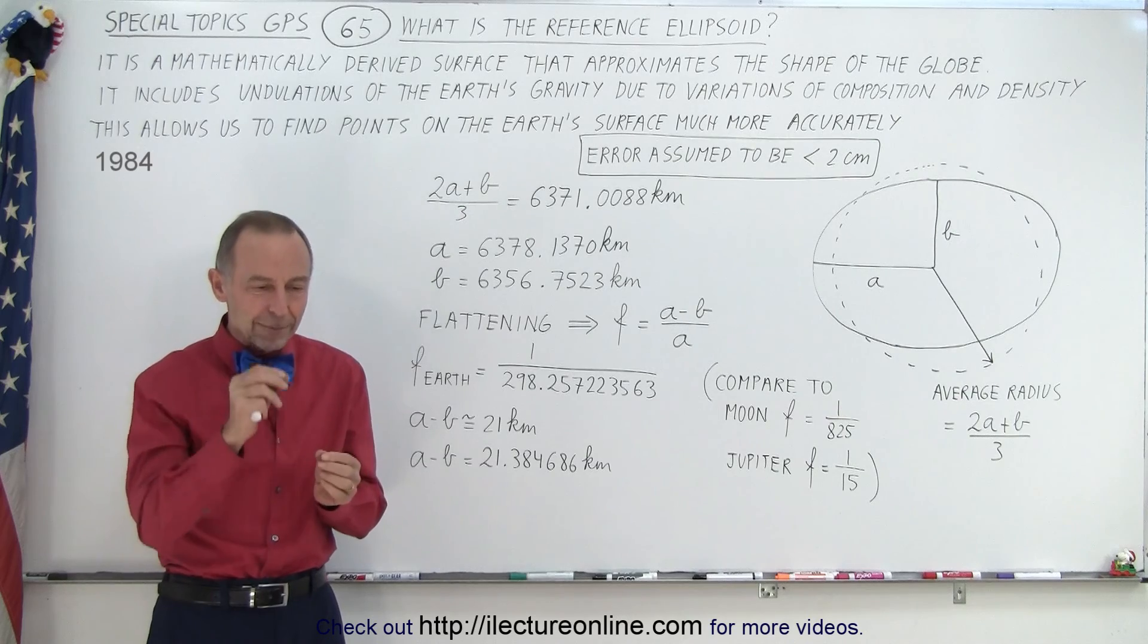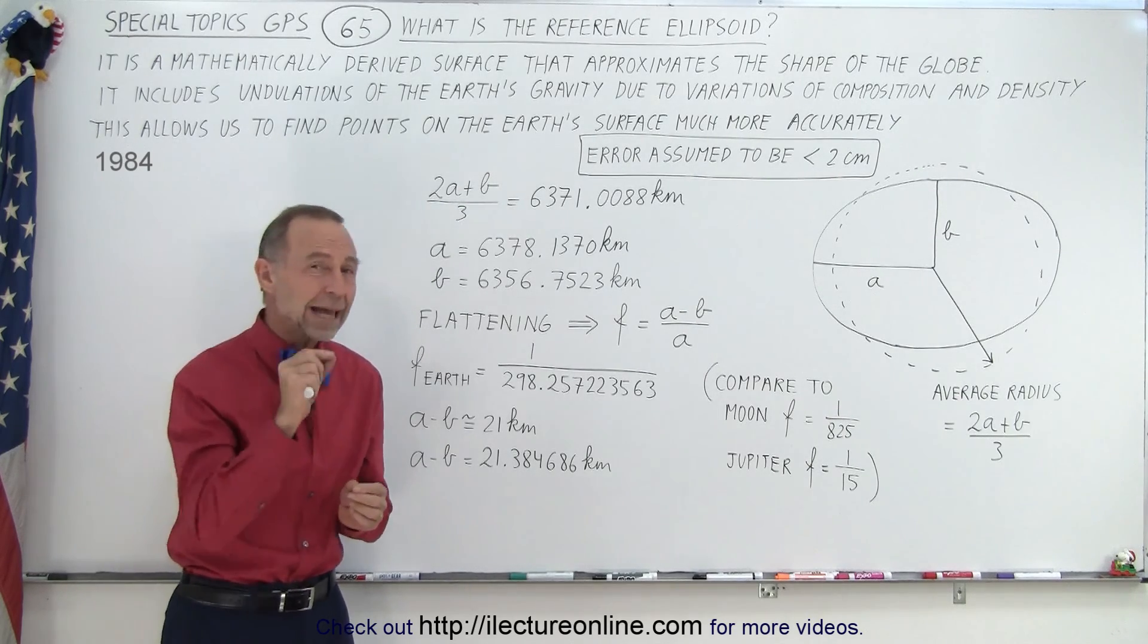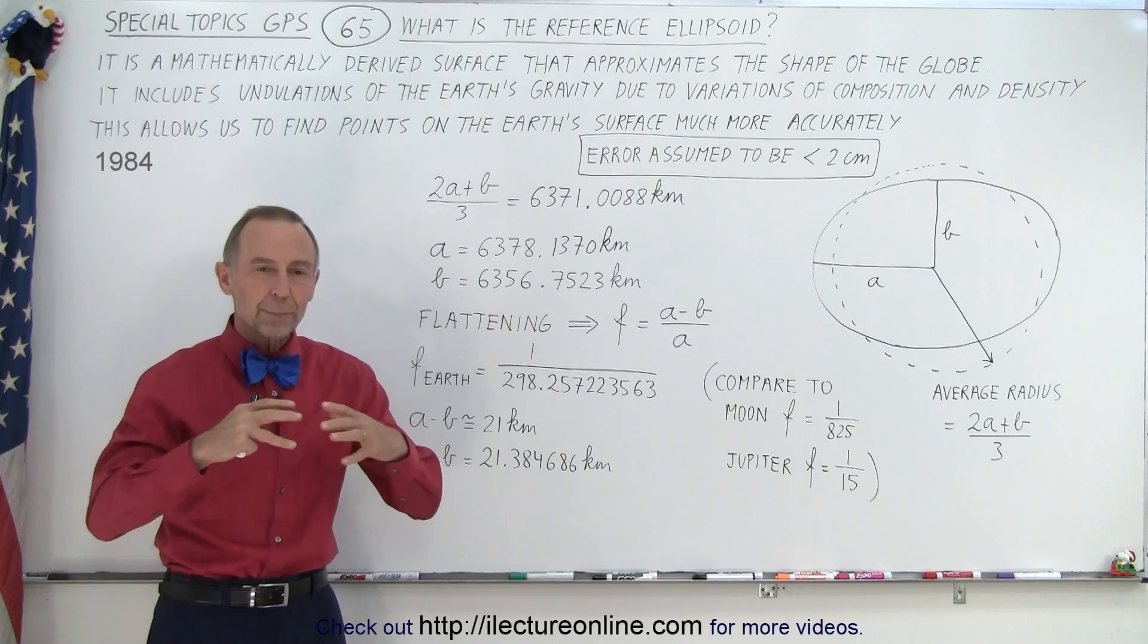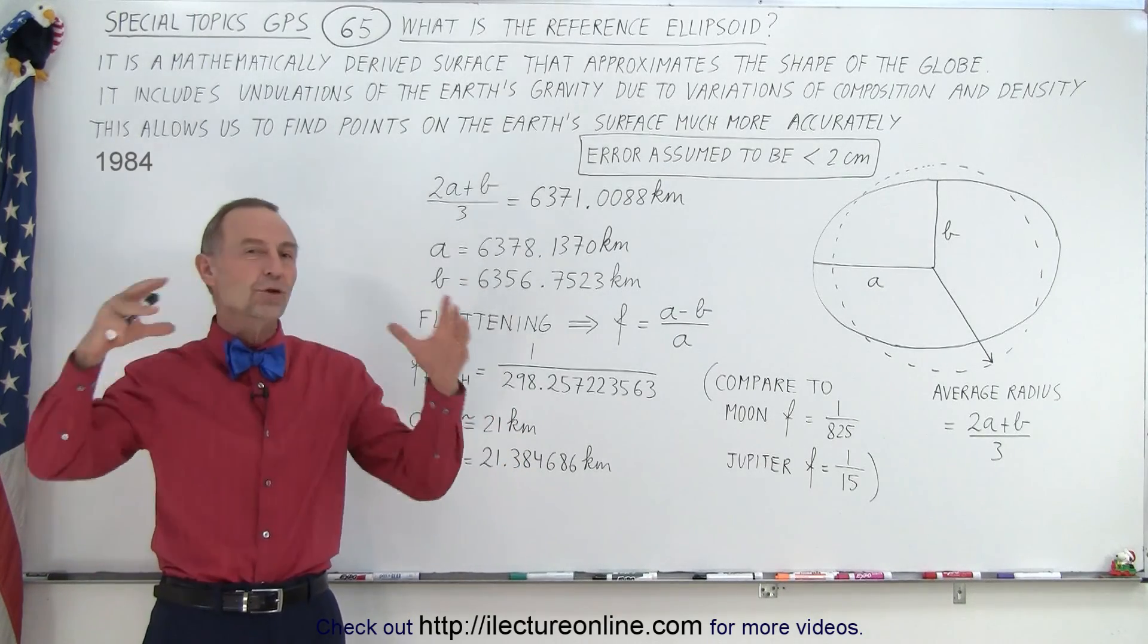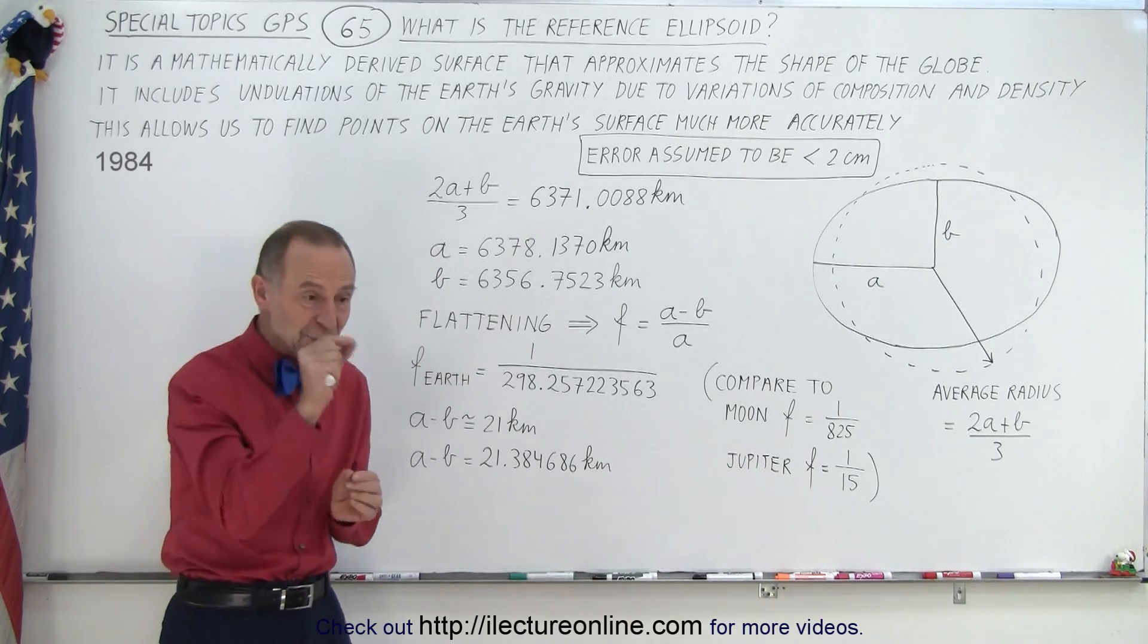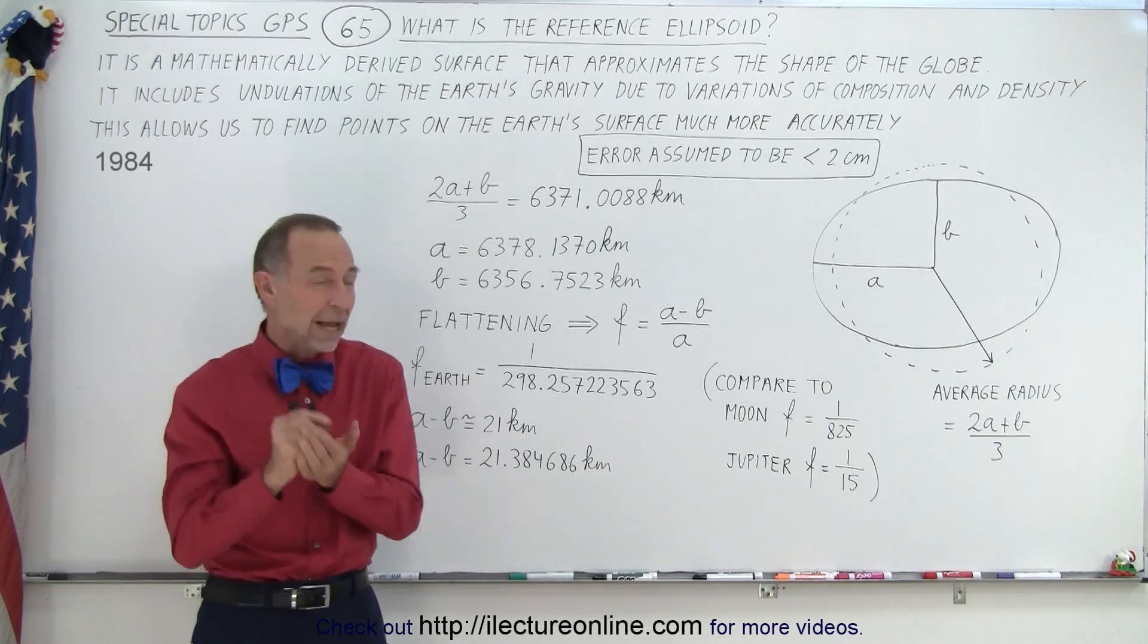So in order to find the position of a point on the Earth extremely accurately, we wanted to come up with a mathematical model of the ellipsoid shape of the Earth. And that way any position on the Earth can be found extremely accurately.